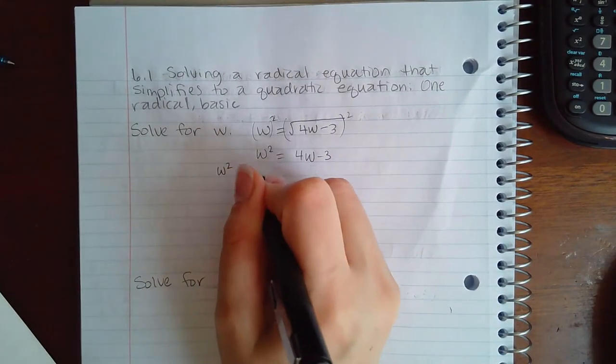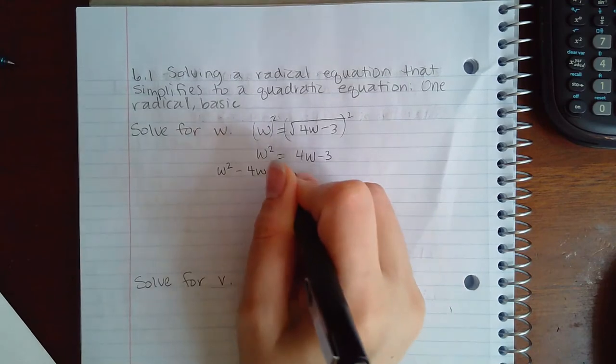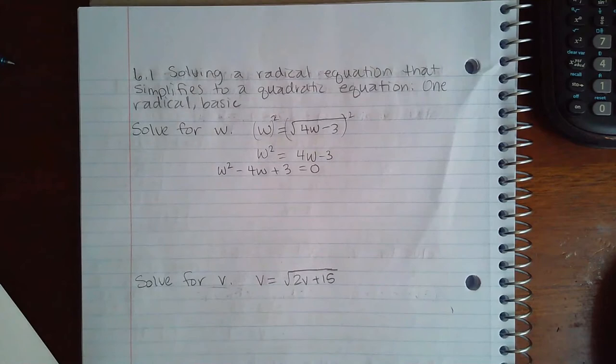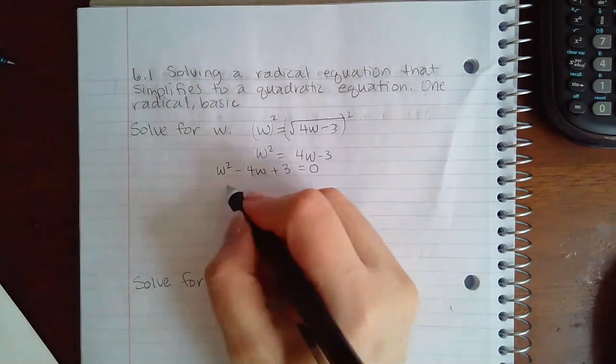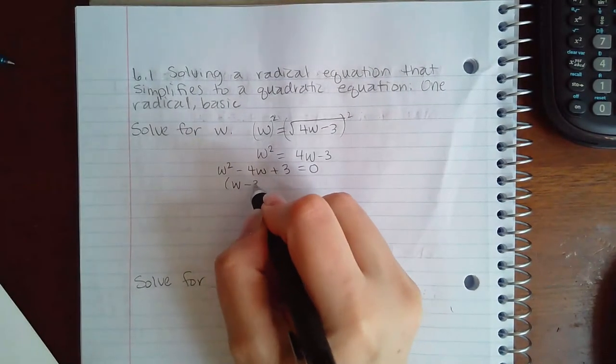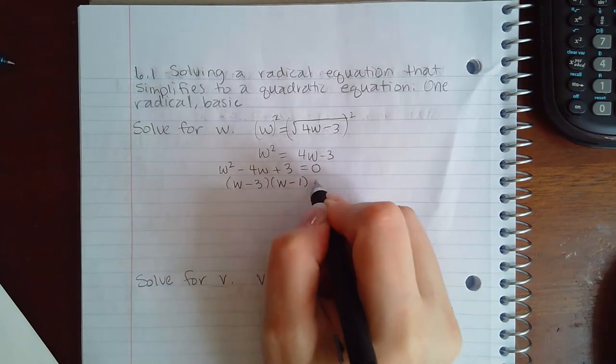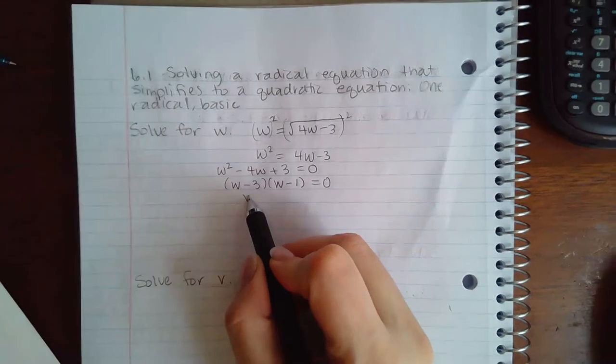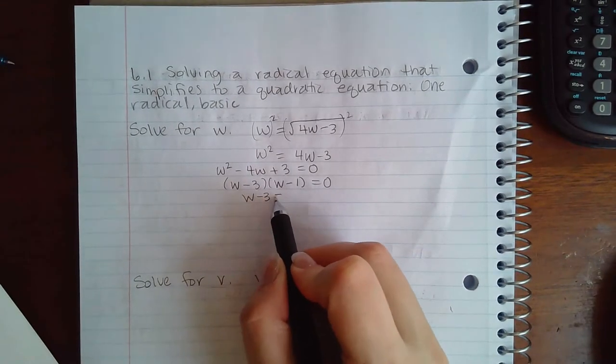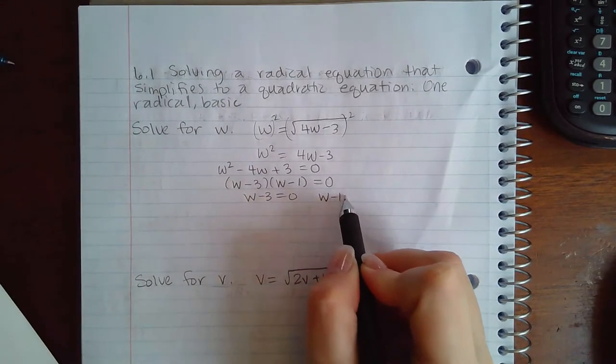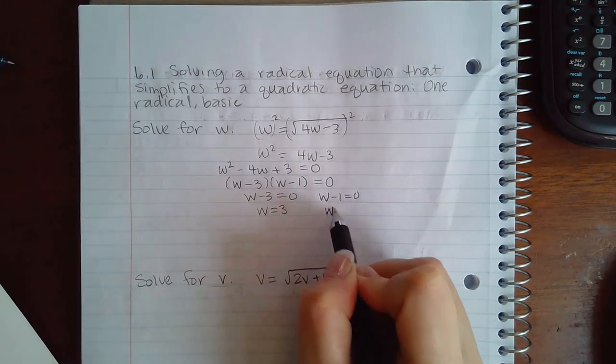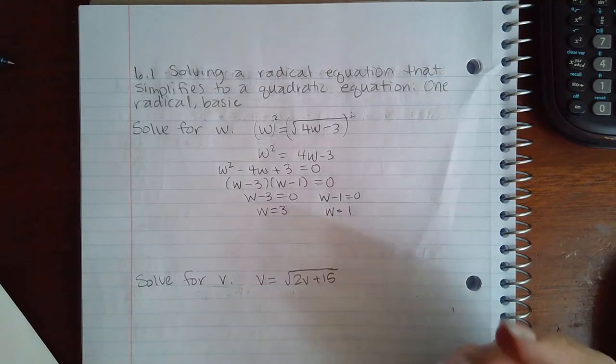So I will minus 4w and add 3 so that they are on the other side now. And then this I can factor, so I'm going to choose to factor it. If you are not great at factoring you can always use the quadratic formula to find these solutions. But I get w minus 3 equal to 0, w minus 1 equal to 0, so w equals 3 or w equals 1.